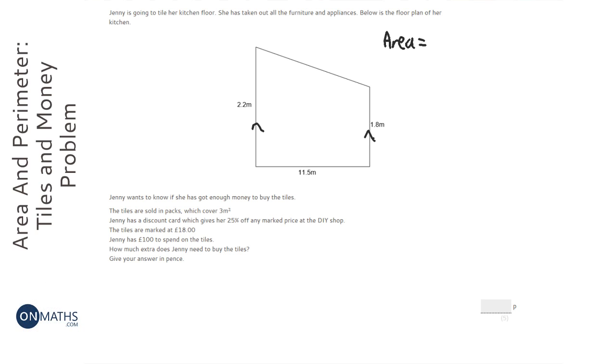And the parallel sides are always the A and the B. And the one connecting them at right angles is always the H. And the formula is half A plus B H. So it's basically the mean average of A and B.